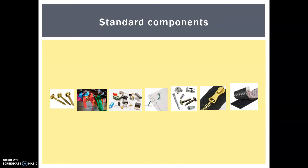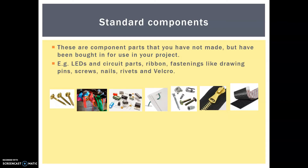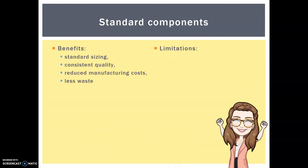Mass production can be absolutely brilliant, particularly with the use of standard components or bought-in components — these are component parts you don't have to make, but can buy for your project, and manufacturers do this too. Things like electronics, circuit parts, ribbons, fastenings, hardware like screws, nails and rivets, Velcro, and textile pieces are all mass produced, so they're really cheap to buy and manufacturers don't have to make their own on site, saving a lot of time and money. The benefits are standard size and consistent quality, reduced manufacturing costs, and less waste overall. But it means your product must fit those components, and it could reduce your overall creativity.